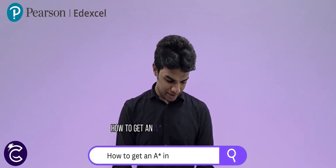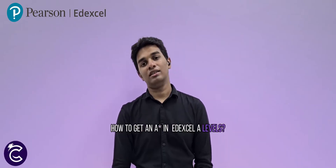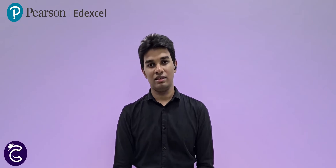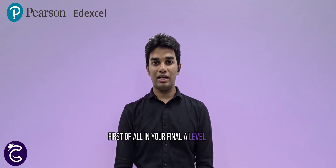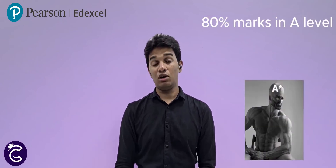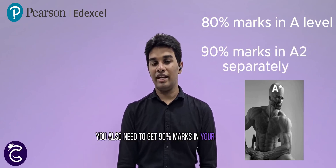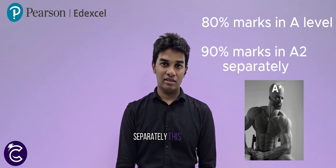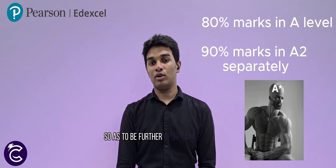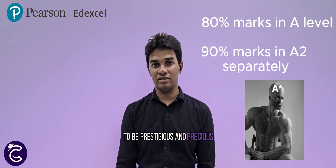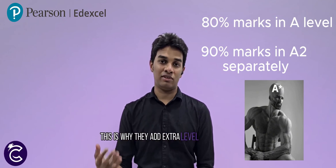So how do you get an A* in Edexcel's A-levels? In order to get an A* in Edexcel's A-levels, two distinct criteria or conditions have to be met. First of all, in your final overall marks, you need a minimum of 80% marks. Not only that, you also need to get 90% marks in your A2 units separately. This is done so as to give further importance to A2 units, because A* is claimed to be prestigious — which is why they add this extra level of requirement.